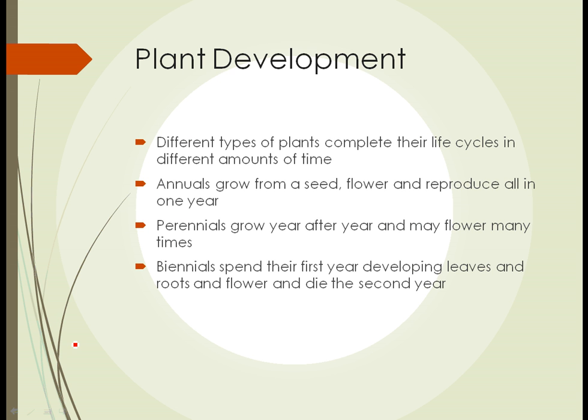Once seeds have germinated, how long does the plant life cycle last? It depends on the type of plant. An annual will grow from a seed to a mature plant, produce a flower, reproduce, and create new seeds all within one year. Perennials grow year after year and may flower many times — most woody plants, trees, and shrubs are perennials, as are plants like daylilies and hostas. Some plants are biennials: in the first year they develop leaves and a good root system, often forming a flat rosette on the ground; in the second year they produce a flower, produce seeds, and die.